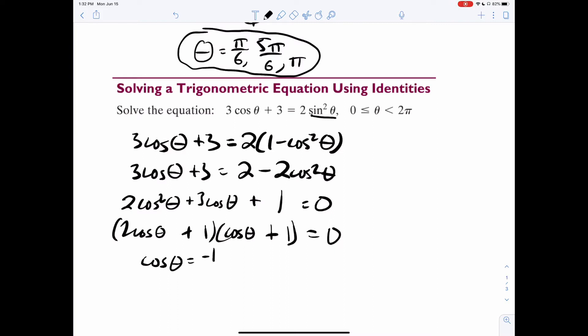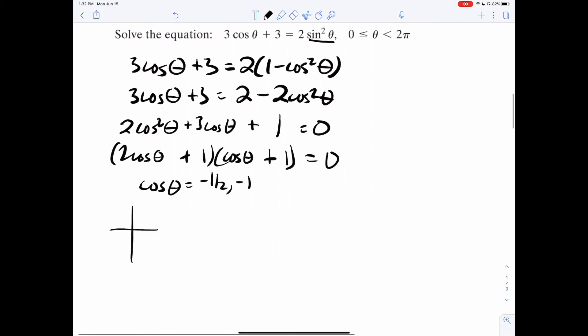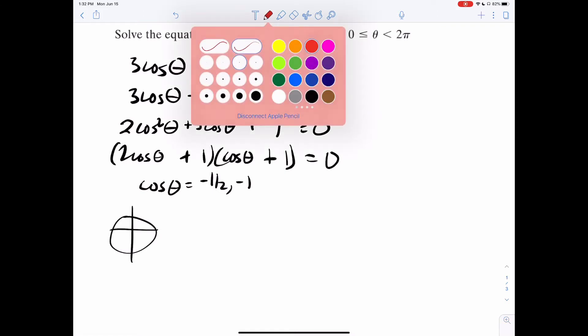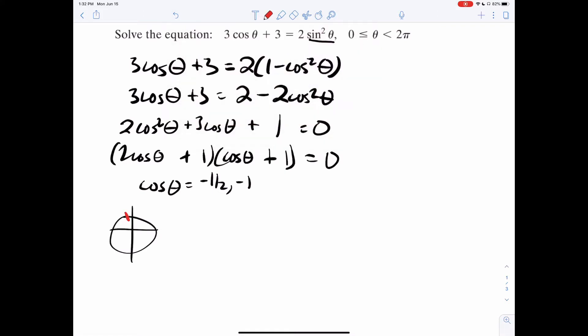And there it is. Cosine theta equals negative one half or negative one. I'll draw my circle. Negative half happens here and here. Negative one right there. So our answers are two pi over three, pi, and four pi over three.